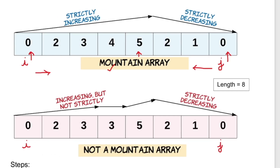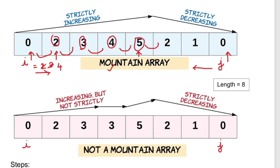Starting with i at 0, we check if arr[i+1] > arr[i]: 2 > 0, so increment i. Then 3 > 2, increment i. Then 4 > 3, increment i. Then 5 > 4, increment i. Now we check 2 > 5 — that's false, so we break the iteration. The final value of i is index position 4, pointing at the peak element.